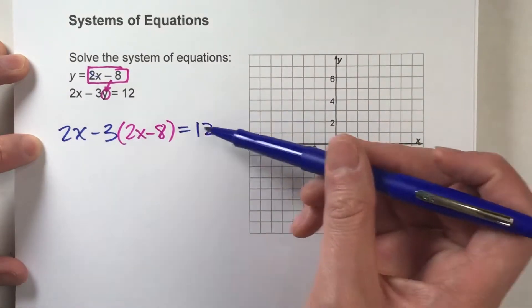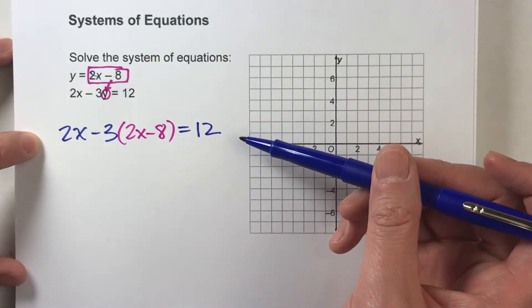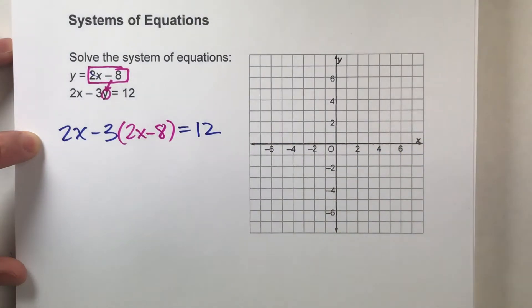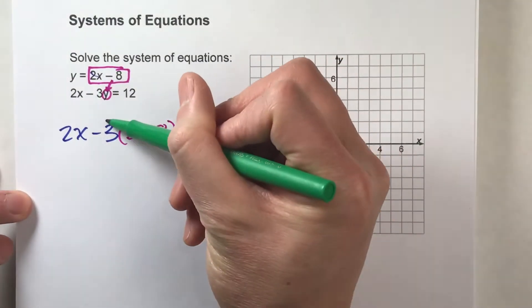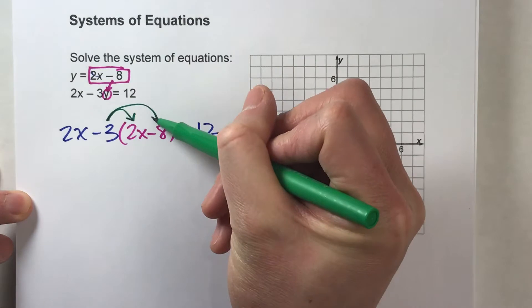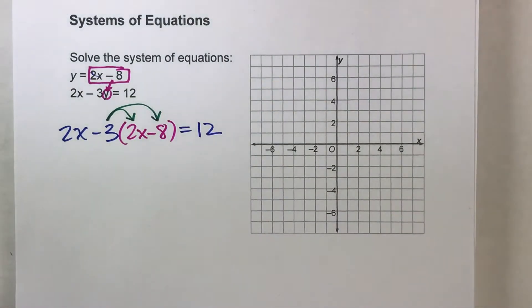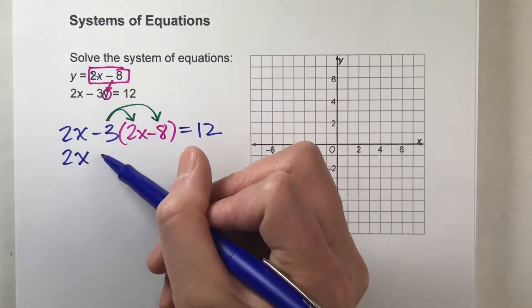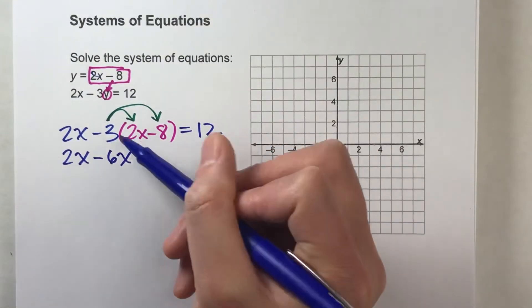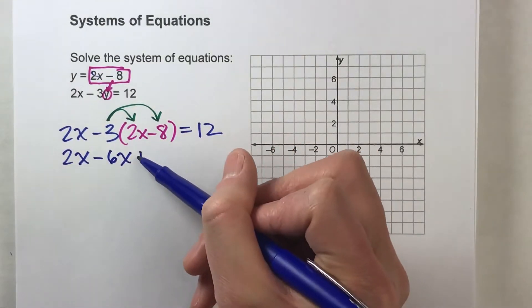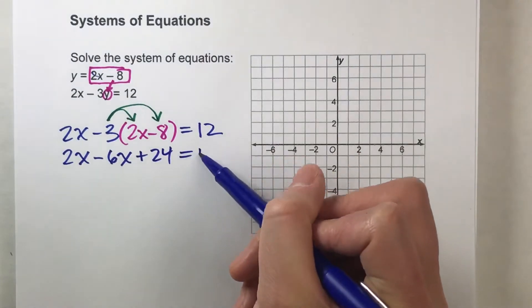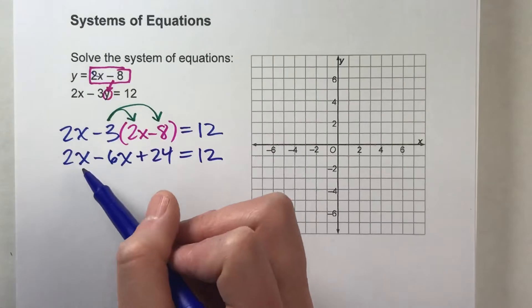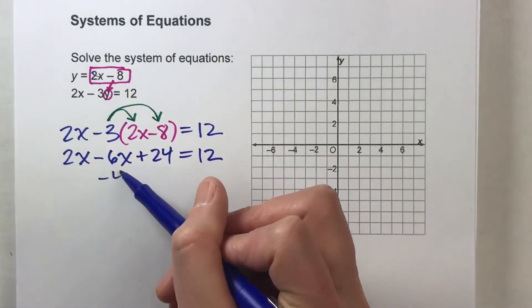Now we have an algebra equation with just x's that we can actually solve to find the value of x. I'm going to use the distributive property because we have a bunch of stuff in parentheses. So: 2x, negative 3 times 2x is negative 6x, and negative 3 times negative 8 is positive 24. Now I need to simplify — I've got x's on the same side. 2x minus 6x is negative 4x.